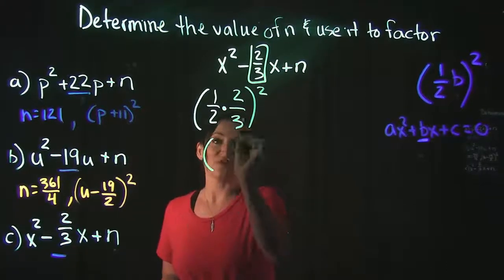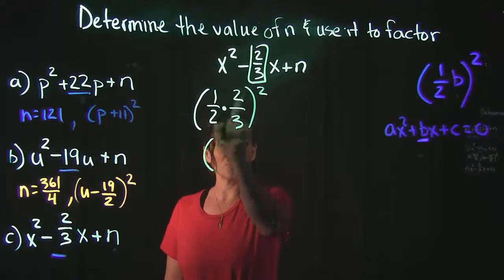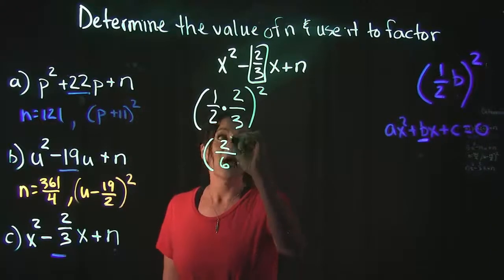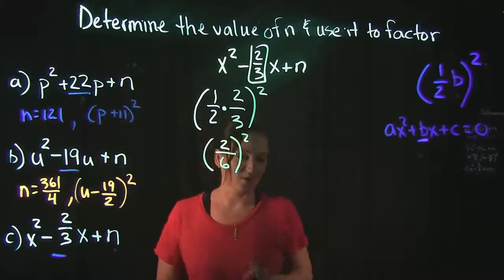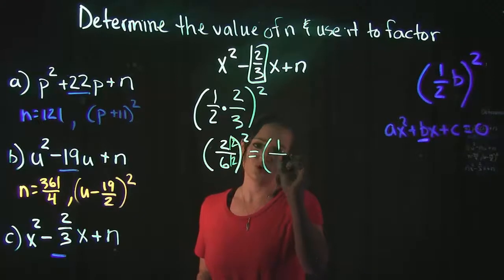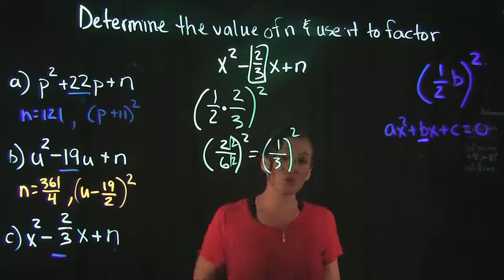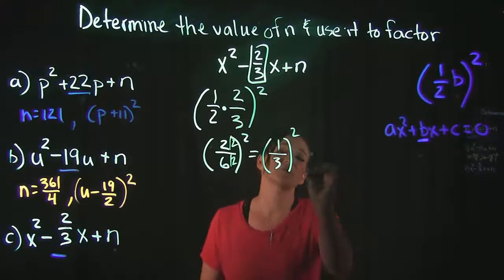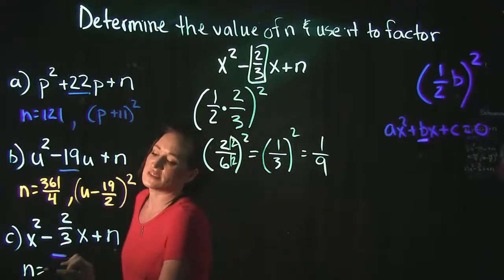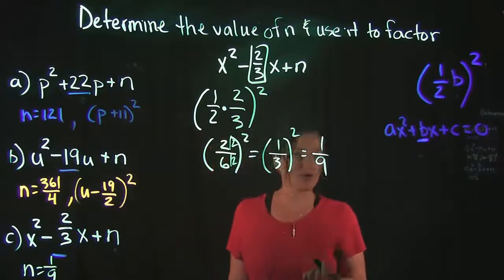Now we need to multiply these fractions together, so remember, numerator times numerator, denominator times denominator. So one times two gives us two over two times three gives us six. But two over six can be simplified—they have a common factor of two, so two over six is actually one third. We still need to square this in order to get n, so one third squared, or one third times one third, gives us one over nine. So that means for example c, our n is going to be one over nine.